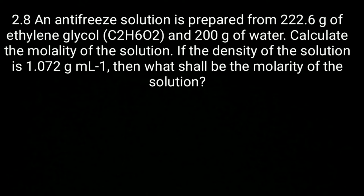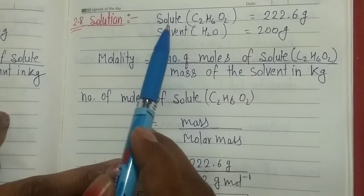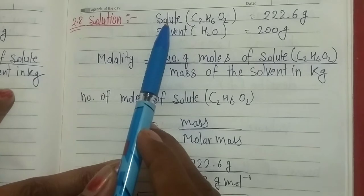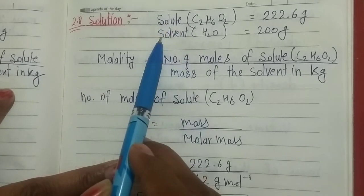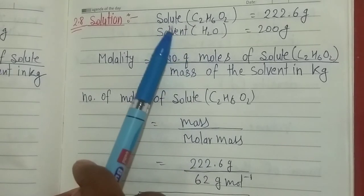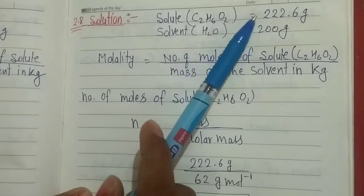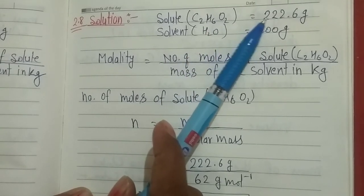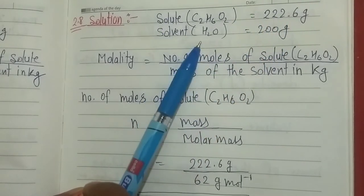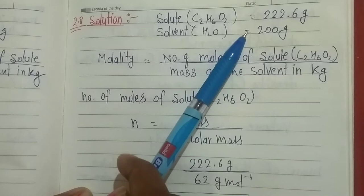We need to find the molality of the solution, and the density of the solution is given as 1.072 grams per milliliter. First, we need to understand which is the solute and which is the solvent. In this question, the solute is C2H6O2, which is ethylene glycol, given as 222.6 grams. Our solvent is water, which is 200 grams.